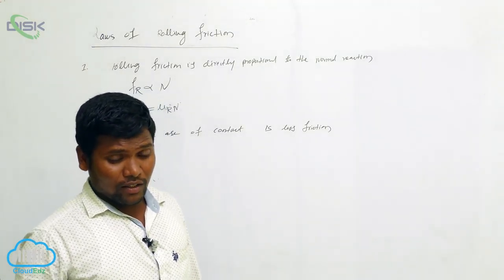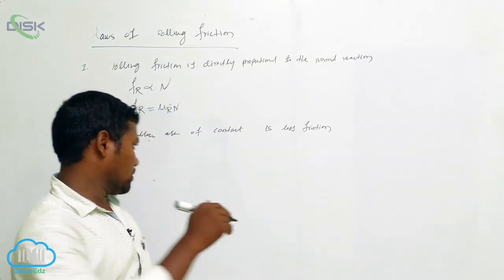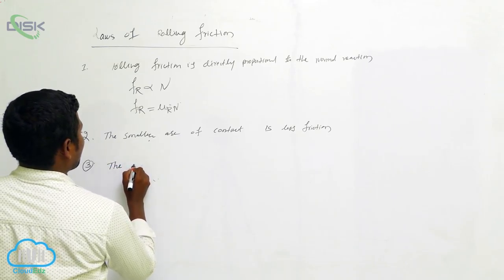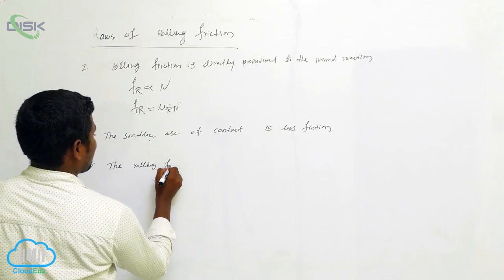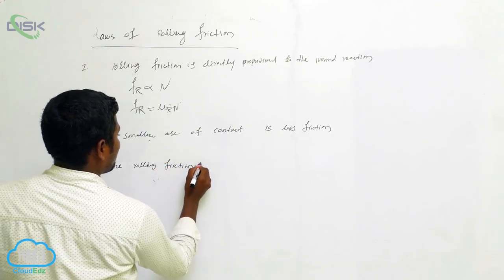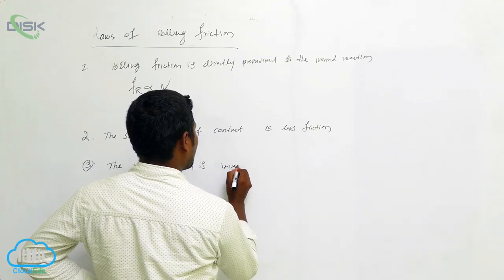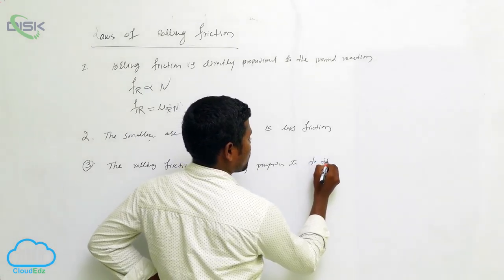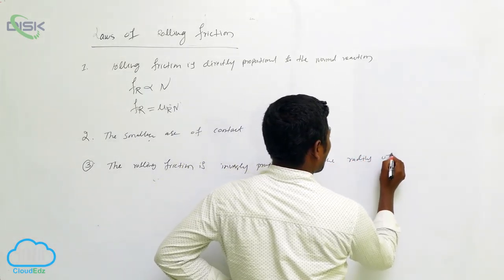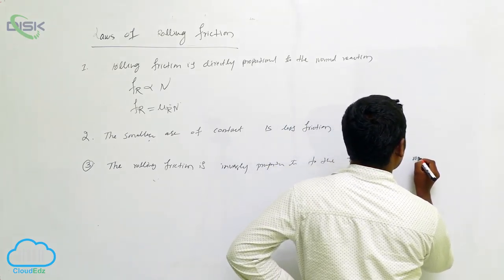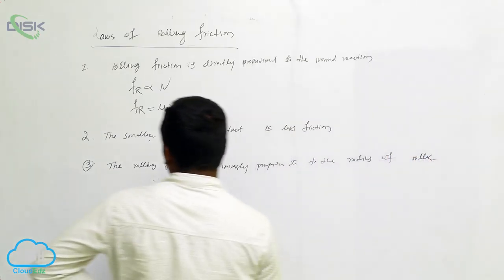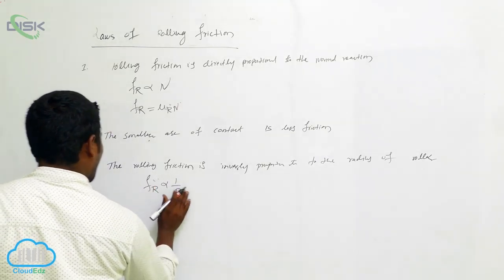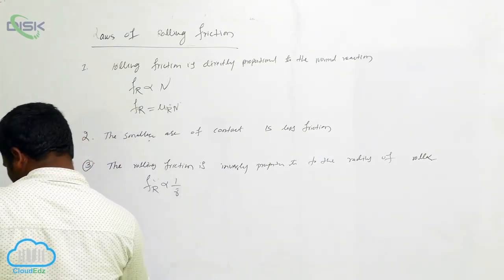The third law: rolling friction is inversely proportional to the radius of the roller. We can write this simply as Fr ∝ 1/r, where r is the radius.